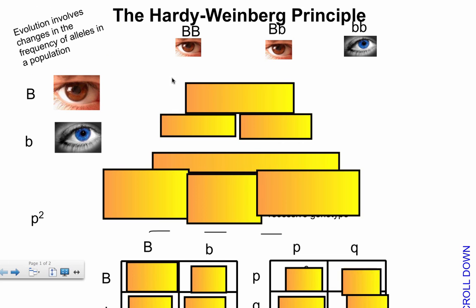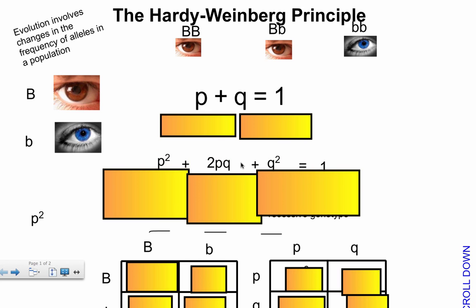So evolution involves changes in the frequency of alleles in a population. I'm going to start off just by showing you the two equations, and it's pretty easy math. The equations are P plus Q equals 1, and another one, which is P squared plus 2PQ plus Q squared equals 1.